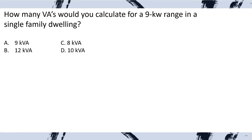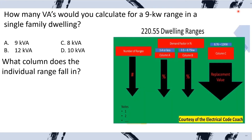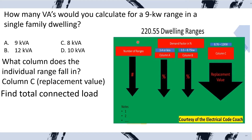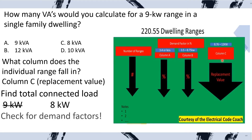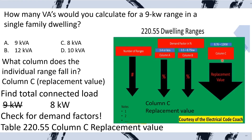How many VAs would you calculate for a 9 KW range in a single family dwelling? The first question we're going to ask is what column does our individual range fall in? Ours is a 9 KW, so it's going to fall into column C because it's greater than 8.76 but not over 12. Column C is a replacement value. Now let's find our total connected load. On the left-hand side we find our number of ranges — in this case it's one — then we cross over to column C and find that our replacement value is 8 KW. Column C is a replacement value, not a multiplier, so we just select C.